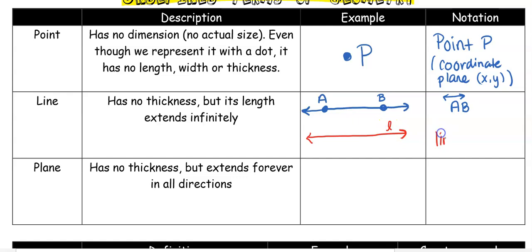You will also see lines named with a lowercase cursive letter, so I could also say this is line l. It does make a difference between a lowercase cursive and an uppercase cursive — for lines we use lowercase cursive. Moving on to the plane: the plane has no thickness like the other undefined terms, but it's going to extend forever in all directions. The line just extends infinitely in one dimension.